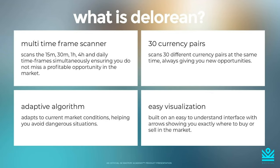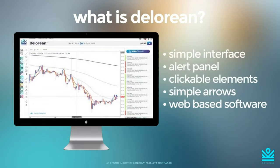It comes equipped with an adaptive algorithm that has been around for a little over three years. This algorithm helps us avoid dead markets — meaning consolidation — and helps us avoid different volume spikes in high-impact situations that can be dangerous to traders. Finally, it comes with an easy visualization that is easy to understand, easy to follow, and ultimately helps us with our execution.